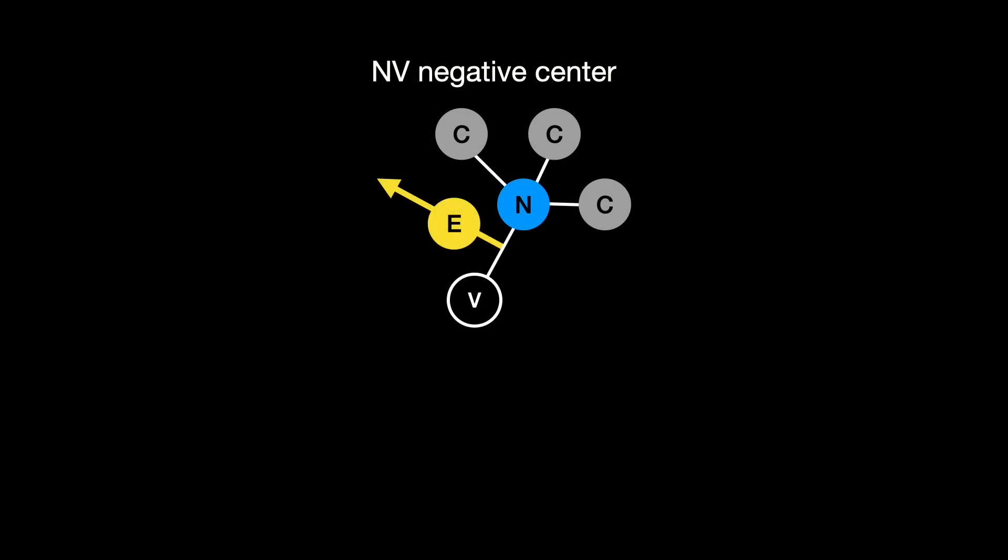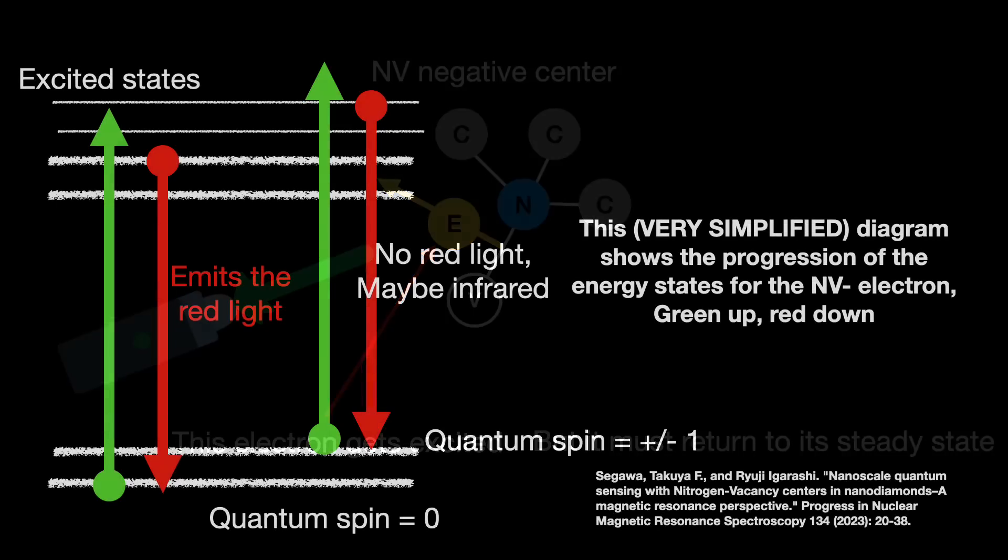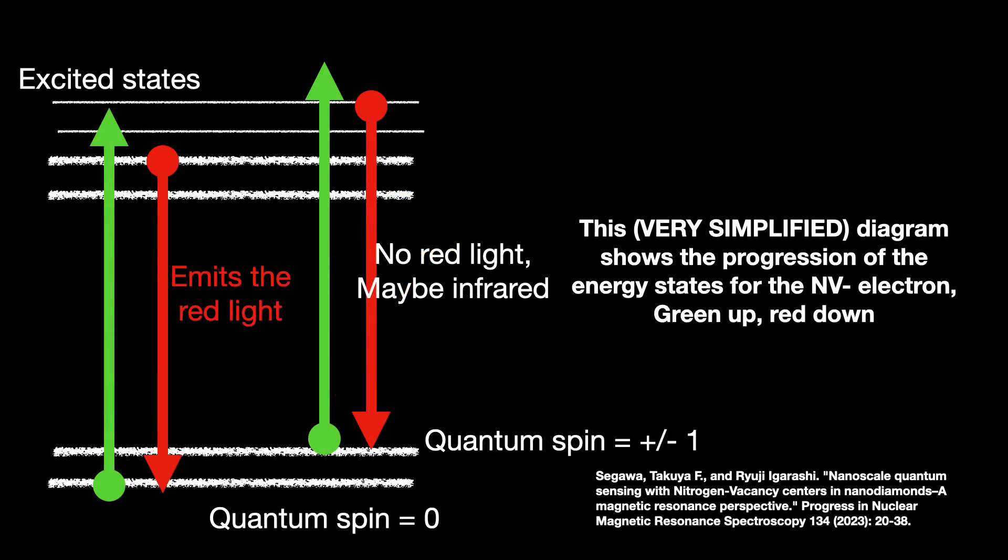How does it work? If you hit the NV negative center with an energetic pulse from a 532 nanometer green laser, you excite its electron up from its stable energy or ground state. Remarkably, this does not change the spin value. The excited electron now must return to the ground state. But the way in which it goes about this depends on its existing quantum spin. If the spin is one value, then it is more likely to emit a red photon. If it is another value, then it must go through a different, intermediate energy state and is thus less likely to emit that red photon. Maybe an infrared photon instead.